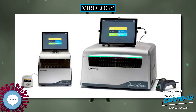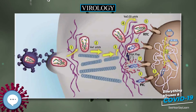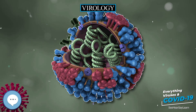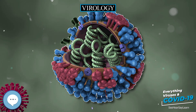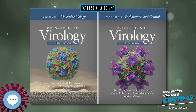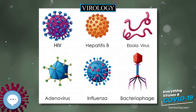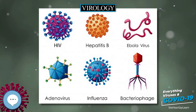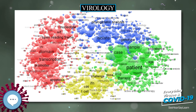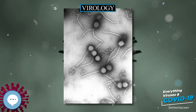In 1937, Max Theiler managed to grow the yellow fever virus in chicken eggs and produced a vaccine from an attenuated virus strain. This vaccine saved millions of lives and is still being used today. Max Delbrück, an important investigator in the area of bacteriophages, described the basic life cycle of a virus in 1937: rather than growing, a virus particle is assembled from its constituent pieces in one step, and eventually leaves the host cell to infect other cells.